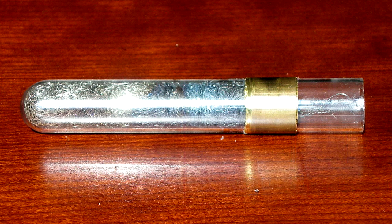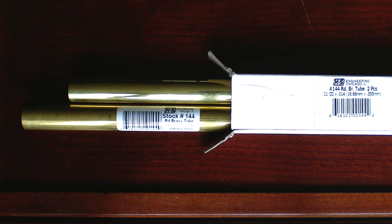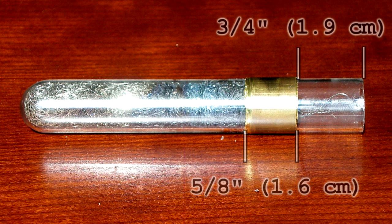The piece of brass tubing around the test tube is 21 30 seconds in diameter. It is made by K&S Engineering and can be found at hobby shops or online. This piece of brass is about 5 eighths of an inch long and is located 3 quarters of an inch from the end of the test tube.